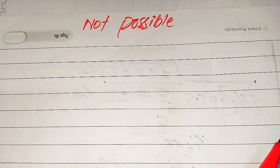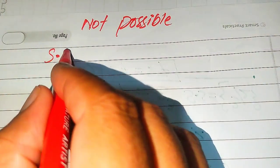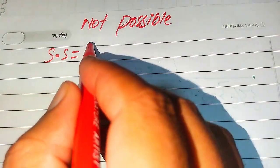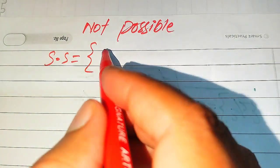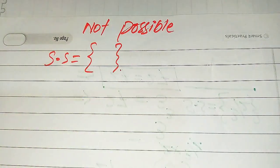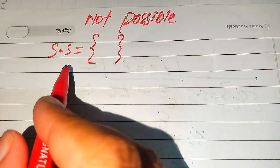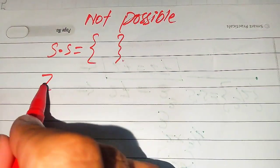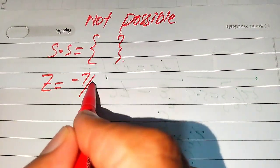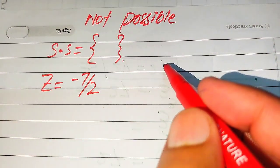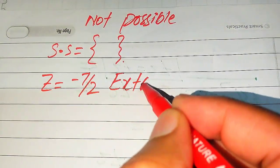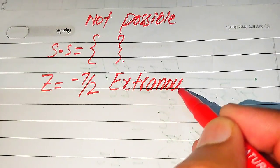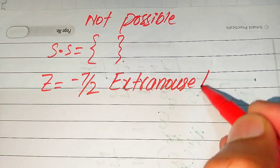Since z = −7/2 does not satisfy the given equation, the final solution set is the empty set. We call z = −7/2 the extraneous root of the given equation.